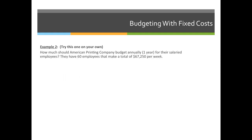Why don't you try number two on your own? How much should American Printing Company budget annually for their salaried employees? They have 60 employees that make a total of $67,250 per week. Pause your video, calculate your answer, and when you're ready push play and we'll go through the correct answer together.